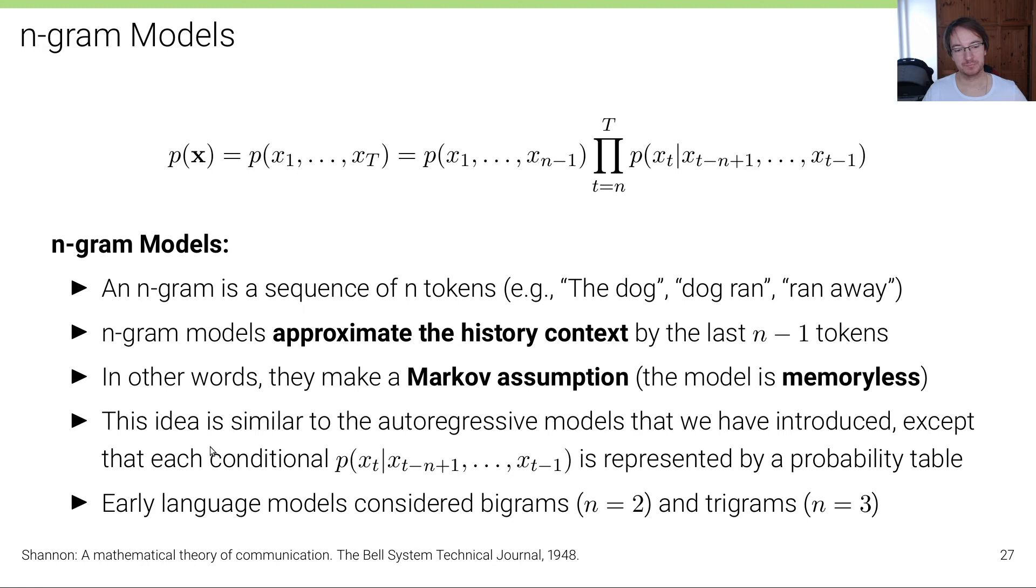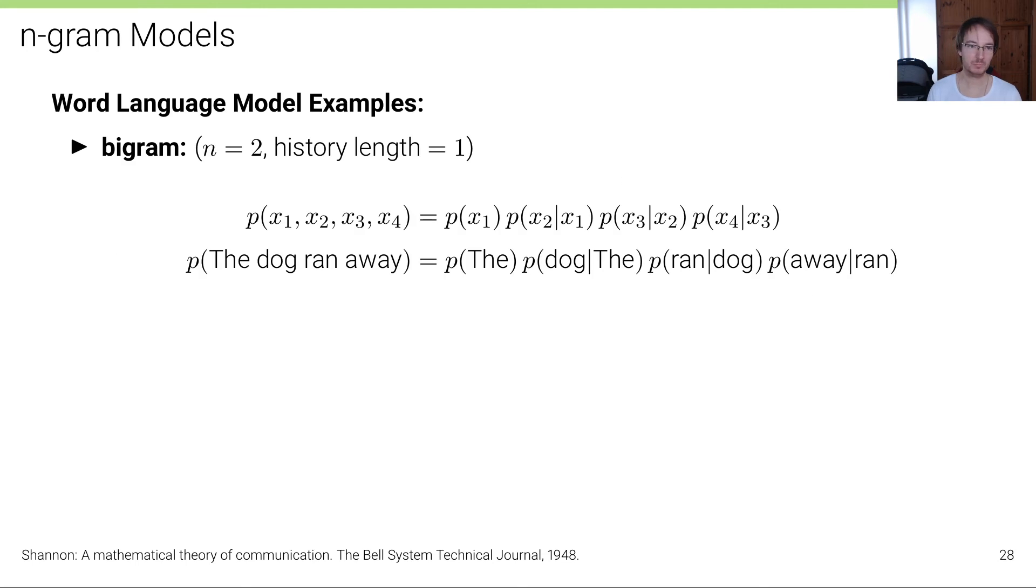Early language models consider bigrams and trigrams, and later people try to increase n, but you can only go so far - n=4, n=5 maybe. Let's look at two examples.